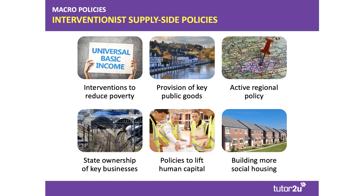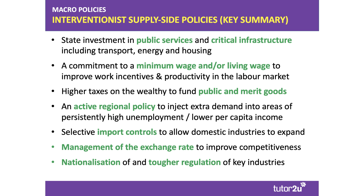Here's a summary slide you might want to use for your notes, giving a flavor of interventionist policies. Typically we'd associate this approach with higher government spending on public services — education, health, housing — and state spending on critical infrastructure including energy. The government would also be committed to things like minimum wages, perhaps even a living wage, designed to underpin work incentives and productivity. The government may also make the tax system more progressive to increase revenue to help fund public and merit goods, alongside an active regional policy.